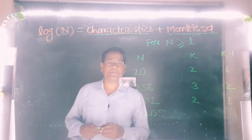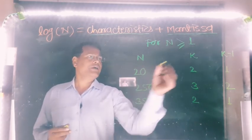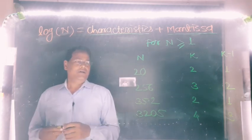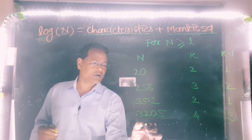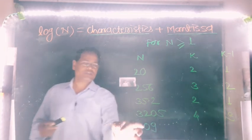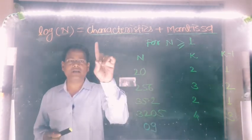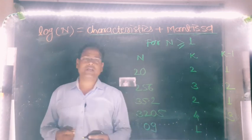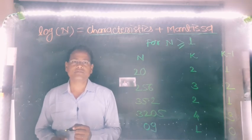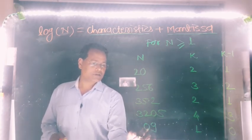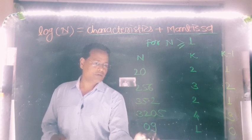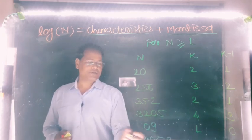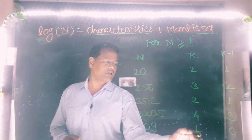How many digits are there in this number? 1, 2, 3, 4 — so k equals 4, characteristics is 3. And for a single-digit number, there is only 1 digit, so characteristics is 0. Last example: 3405.9 — counting the digits: 1, 2, 3, 4 digits before the decimal point, so characteristics is 3.